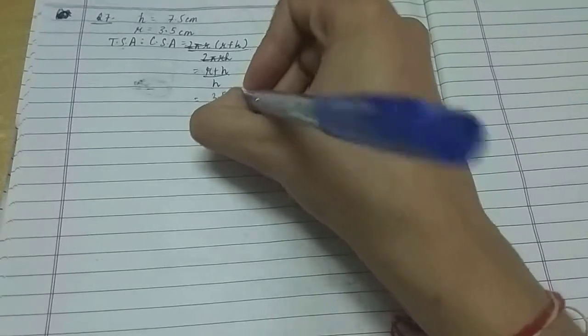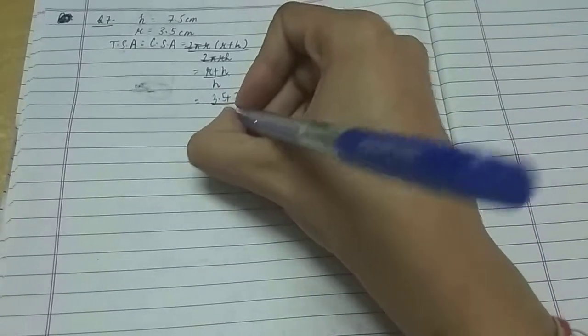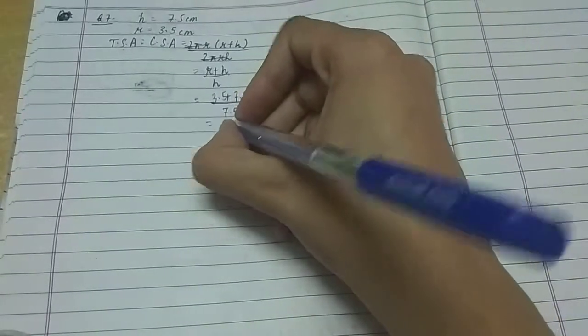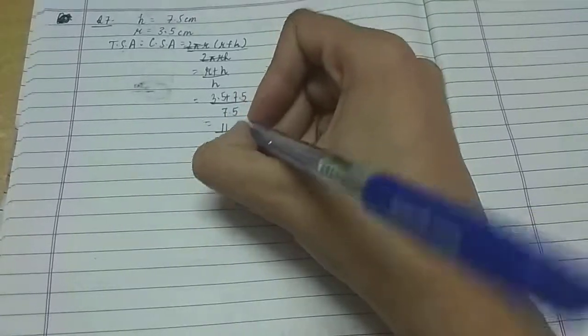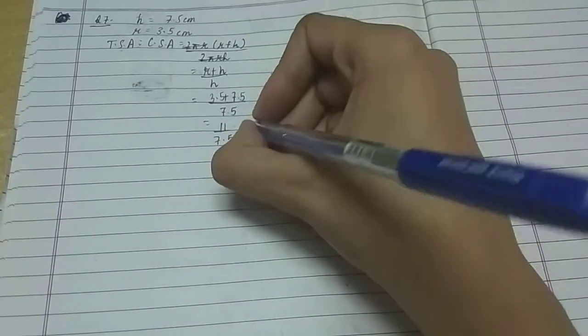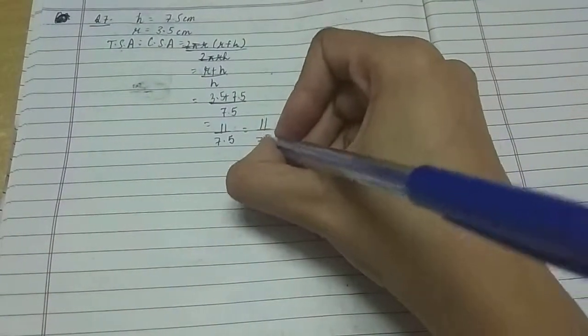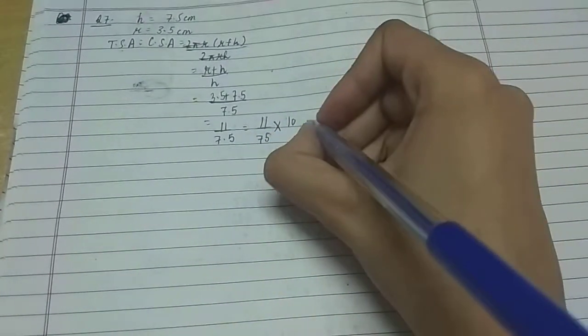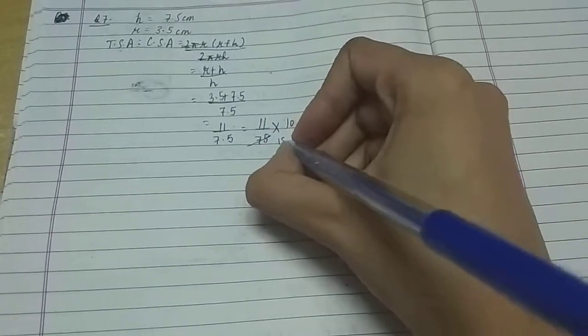...is 3.5, height is 7.5, and again height is 7.5. So it would be 11 by 7.5, and the answer would be... so 11 by 7.5 into 10, this can be written like this: 5 1s are 5, 15... 5...